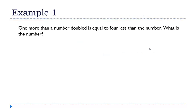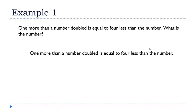One more than a number doubled is equal to 4 less than the number, and we want to find the number. The way I like to approach these problems is by doing a literal translation of the English statement into an algebra equation. I'll start with the expression and break it up into parts — 1 more than, a number, doubled, is equal to, 4 less than, and finally the number.